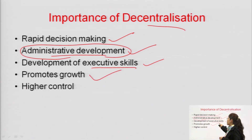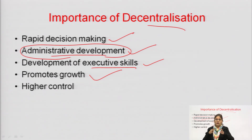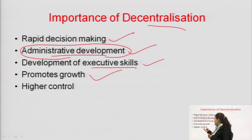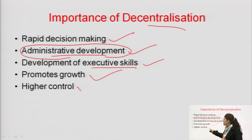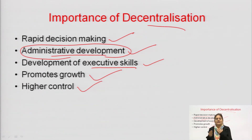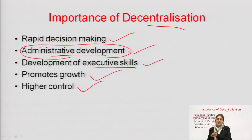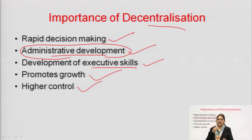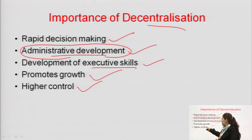Next, decentralization promotes growth. Obviously, if specialized people are managing their work properly, growth is confirmed in the organization. Next is higher control — because there is direct communication between the head of the department and their subordinates. The head of the department or staff officer directly communicates and interacts with their group members, so obviously there would be higher control.